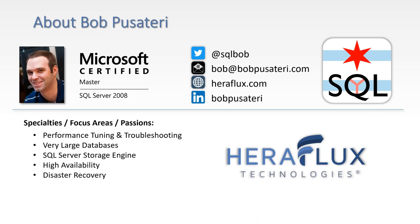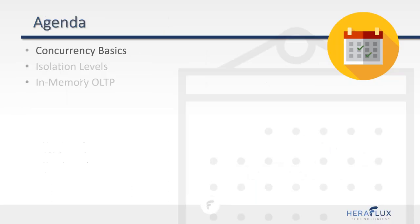Today's session covers concurrency and isolation levels in SQL Server. We'll start with a brief introduction to the basics of concurrency, then go into isolation levels themselves — the majority of this session — and follow up at the end with a very brief introduction to SQL Server's in-memory OLTP features introduced in SQL Server 2014, which differs from everything else we'll discuss.